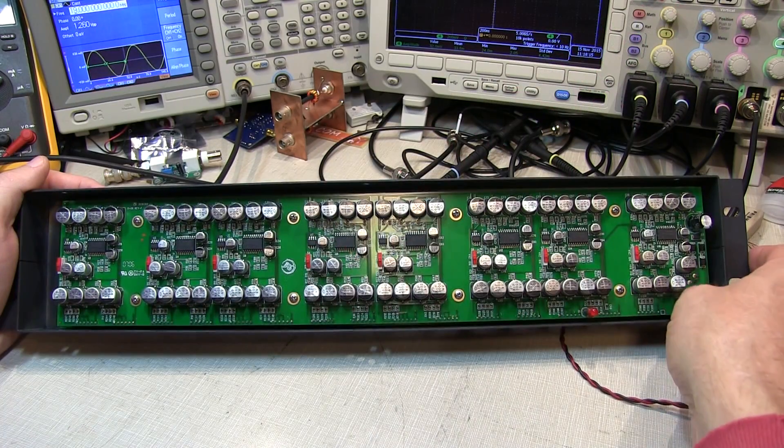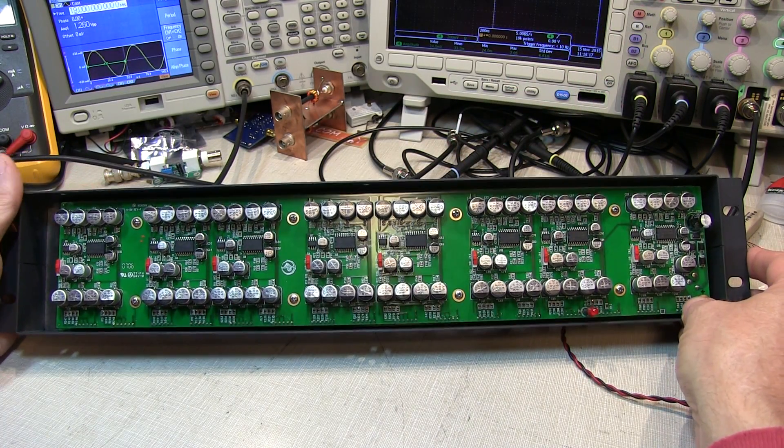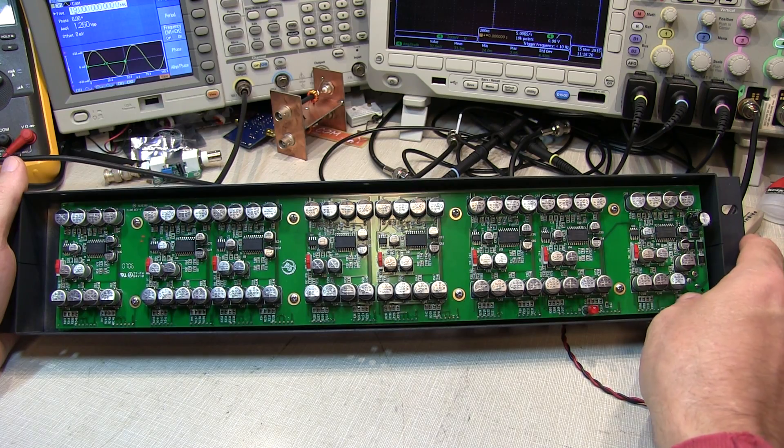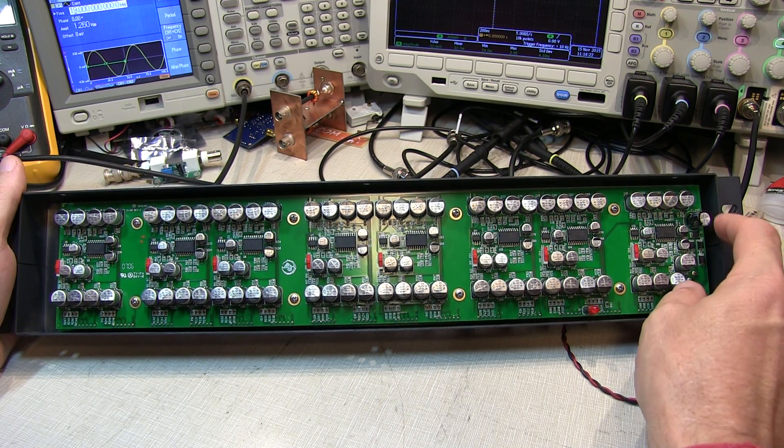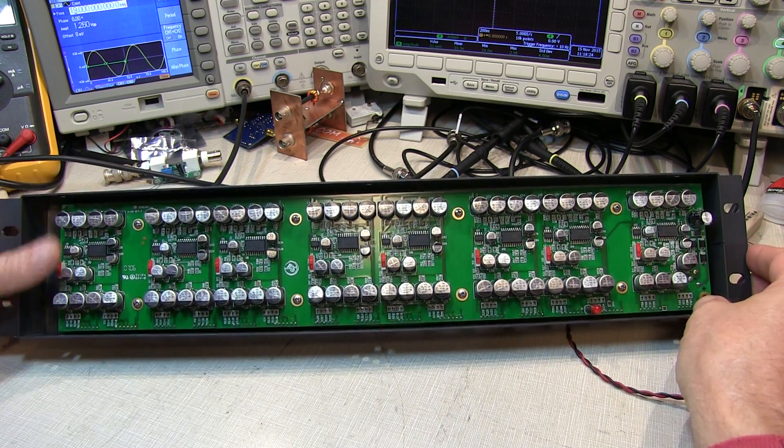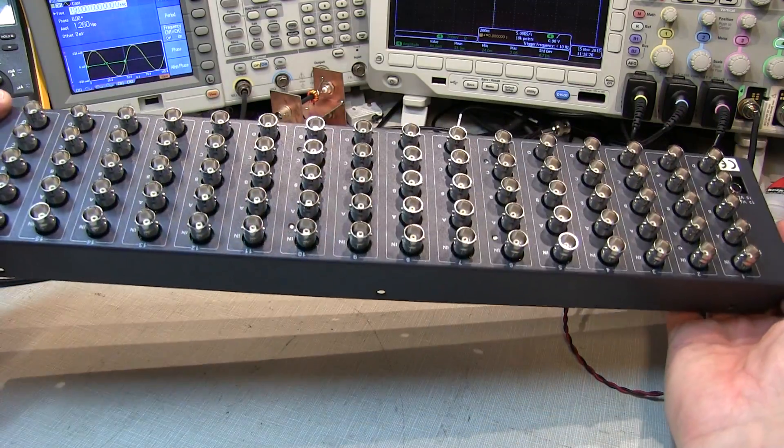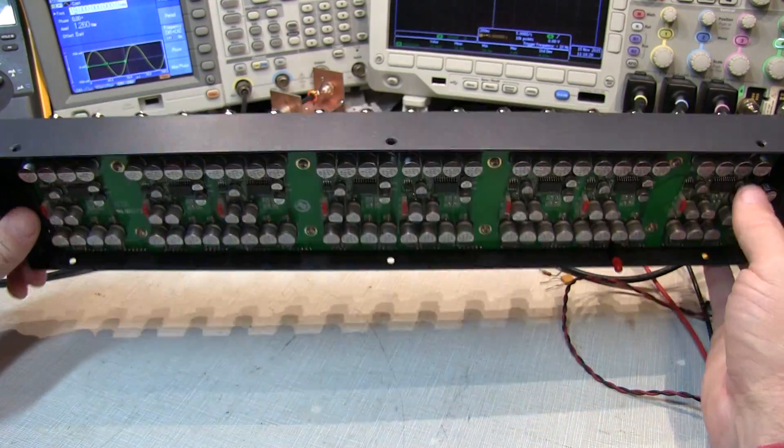Well, the fact that every one of the channels on this thing works with about 20 megahertz worth of bandwidth for unity gain starts to make me rethink a little bit about my decision just to rip all the BNC connectors out of this thing and toss it.